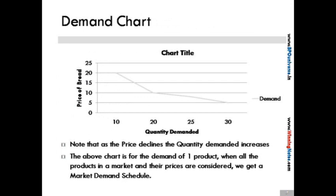As per the law of demand, when the price rises the quantity demanded falls. The demand chart on slide 7 shows this graphically for one product — as price rises, quantity demanded falls. If we add multiple price points, we get a demand schedule, or a market demand schedule, for that product.